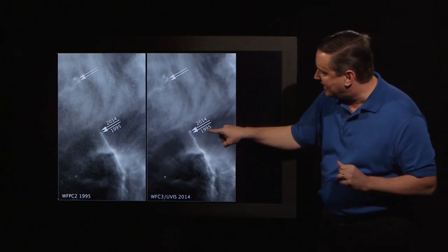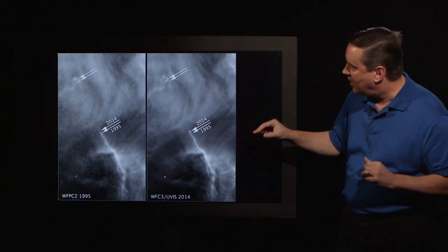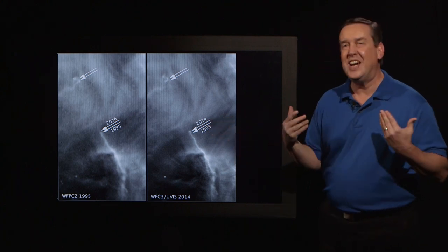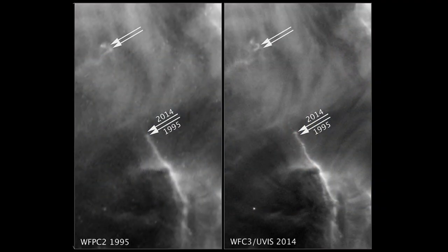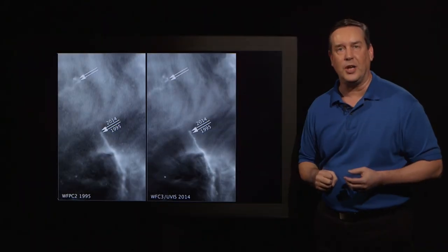The arrows indicate the end of the jet between those two epochs. Over 19 years, that jet traveled 60 billion miles. Not much changes in the human lifetime in the universe, but here we can actually observe something changing on our time scales.